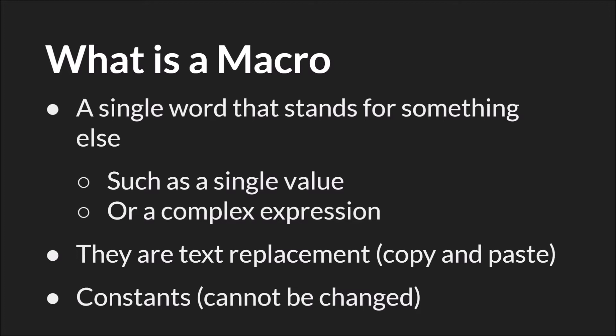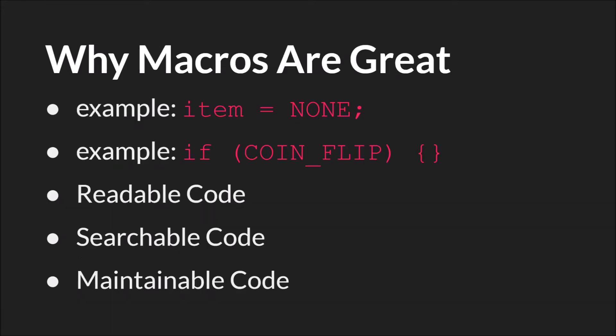They are also constants, which means they cannot be changed. Macros are great because they allow you to use shorthand to reference things in code or name things to be more helpful, and this helps make your code more readable, searchable, and maintainable.